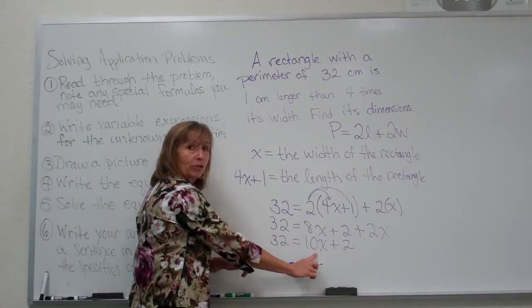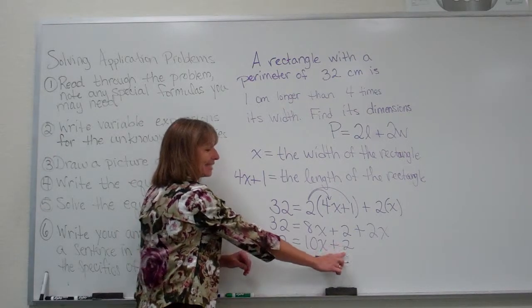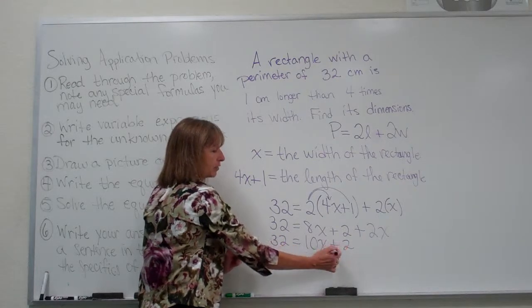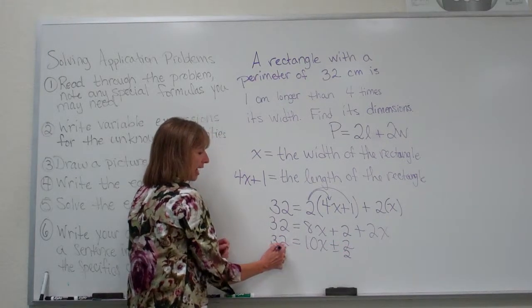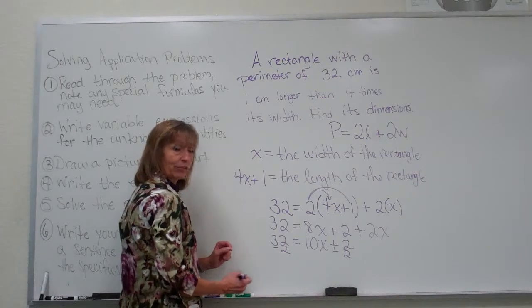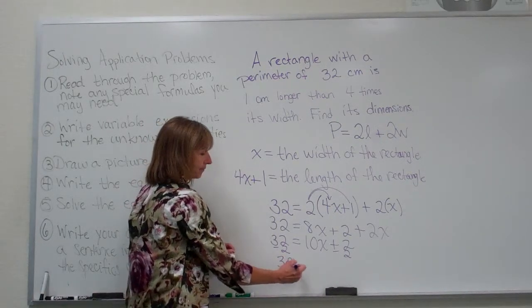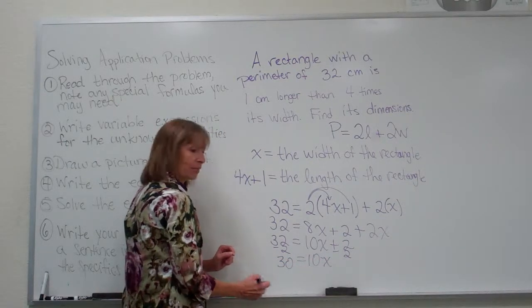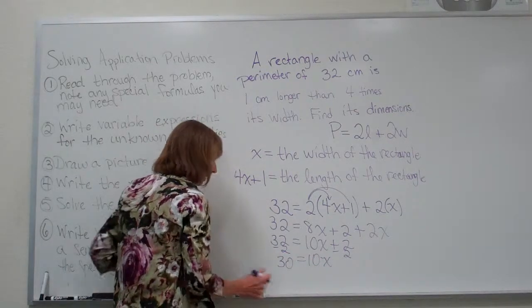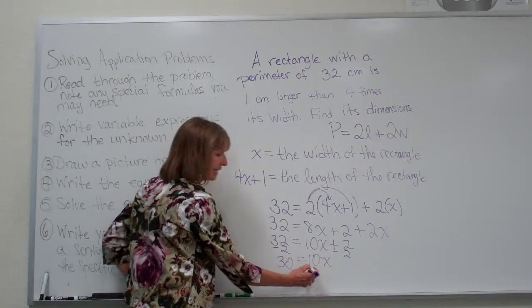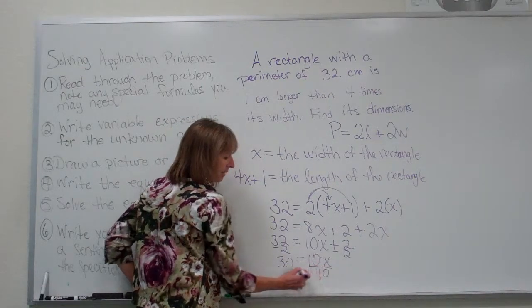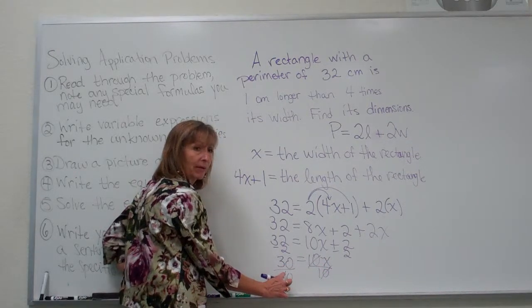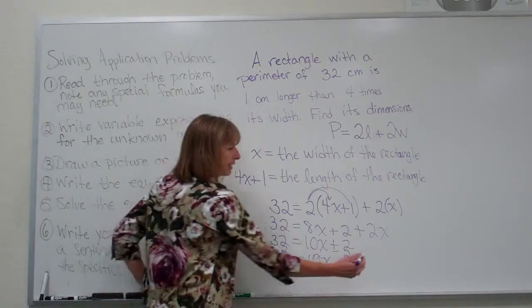And now all of my terms with x are on one side. My term that doesn't have an x that's also on the right side, I need to move that to the other side. So we'll subtract 2 from both sides. And we'll get 30 is equal to 10x. And then lastly we'll divide both sides by the coefficient of the letter and the coefficient of x is 10. We'll divide both sides by 10 and get that x is equal to, well 30 divided by 10 is 3. So x is equal to 3.